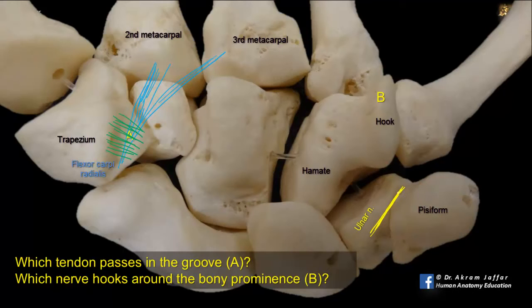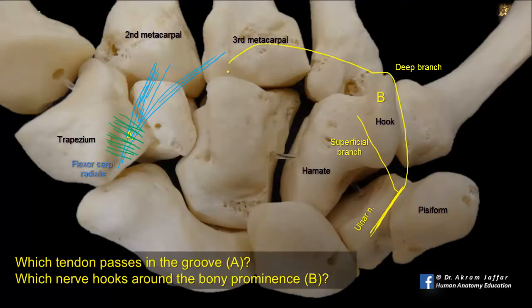The ulnar nerve supplies a superficial branch and a deeper branch. The deep branch passes deeply and it hooks around the hook of the hamate within the concavity of the deep palmar arterial arch, thus indenting the hook of the hamate with a shallow groove while arching across the palm.